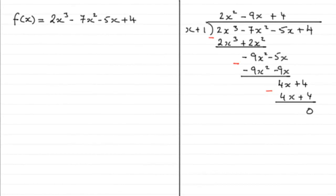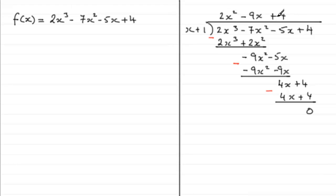In this last part, we're asked to factorise f(x) completely. We already found that (x+1) was a factor in an earlier part. So, by dividing (x+1) into our cubic polynomial, we get the quadratic factor, and this tells us that (x+1) times the quadratic factor should equal this cubic expression.